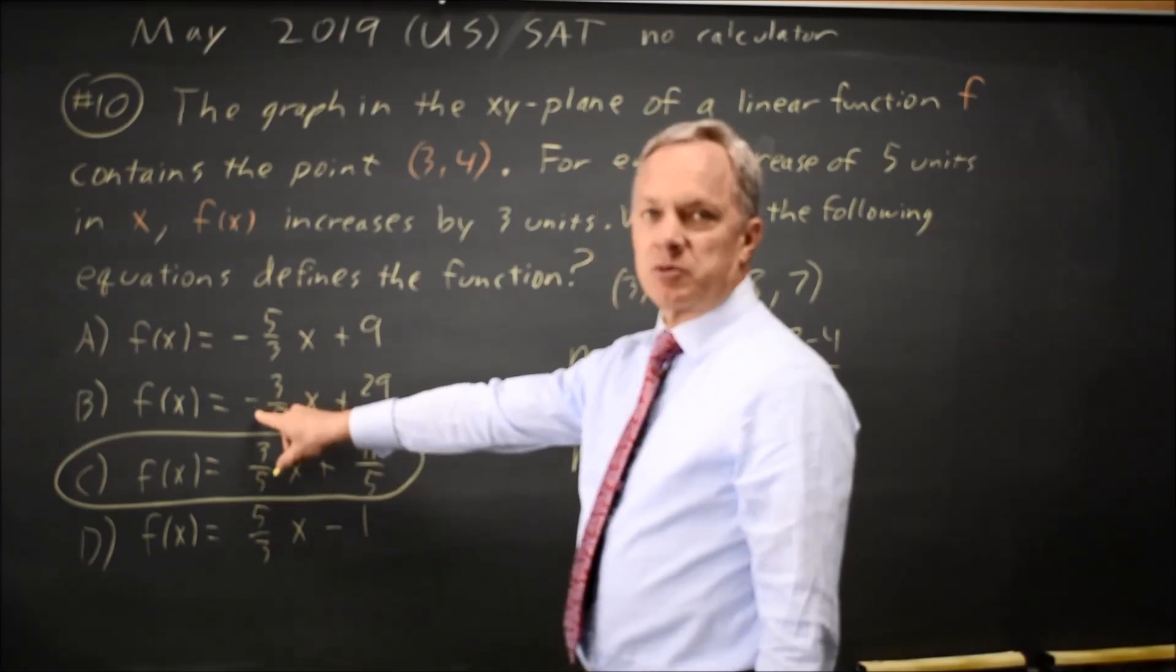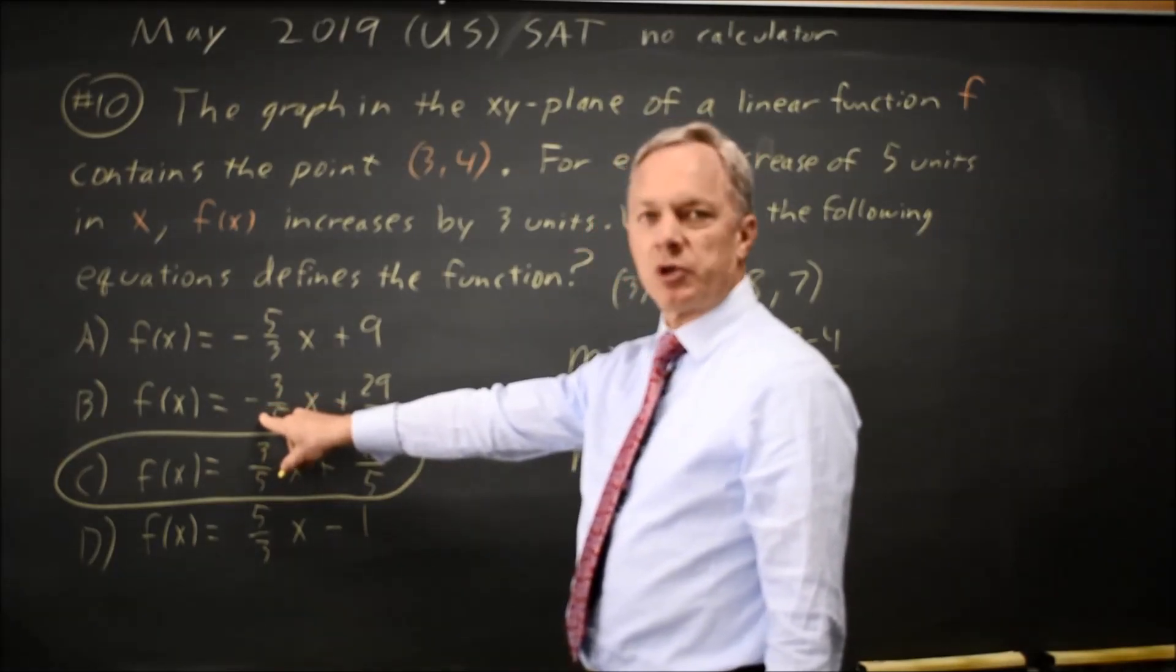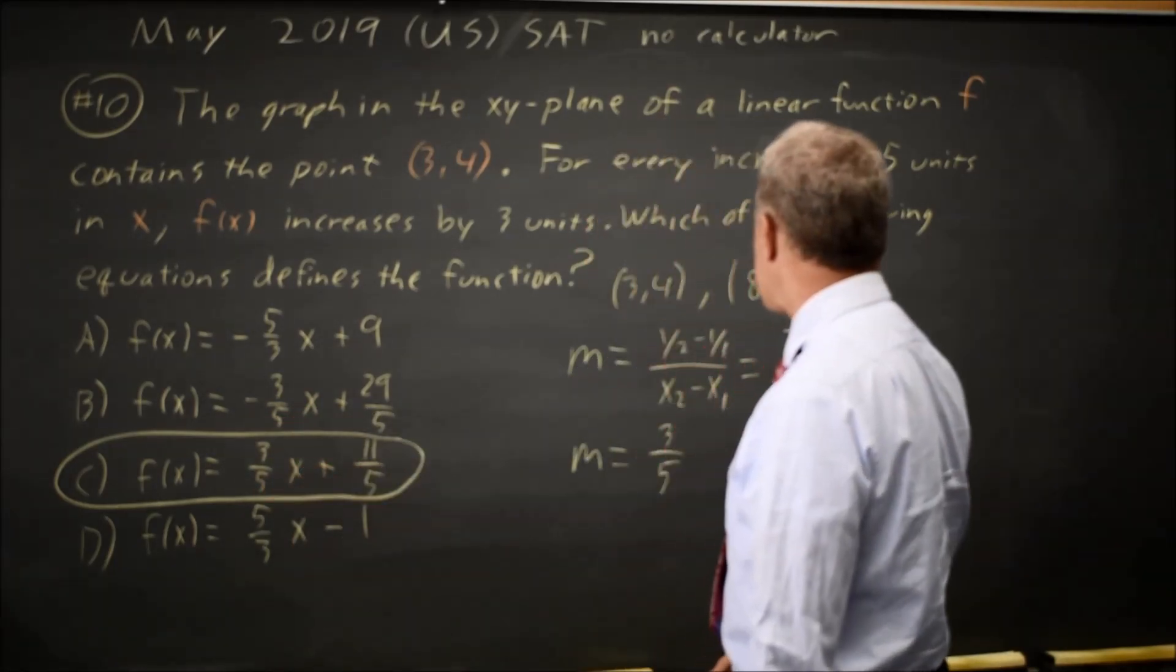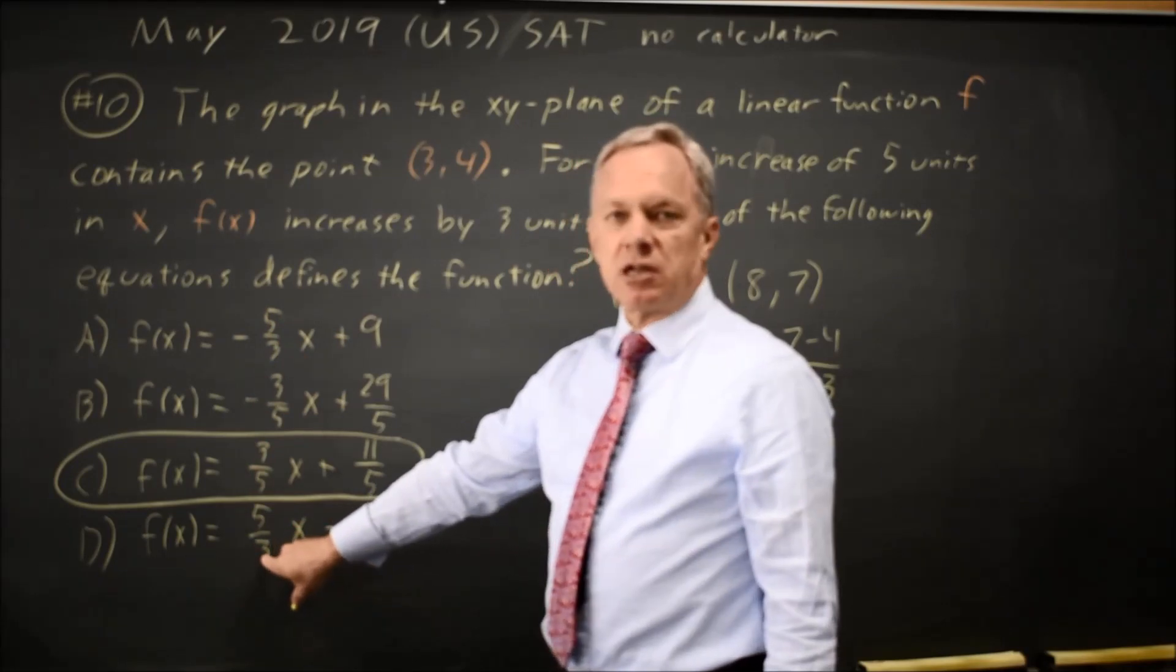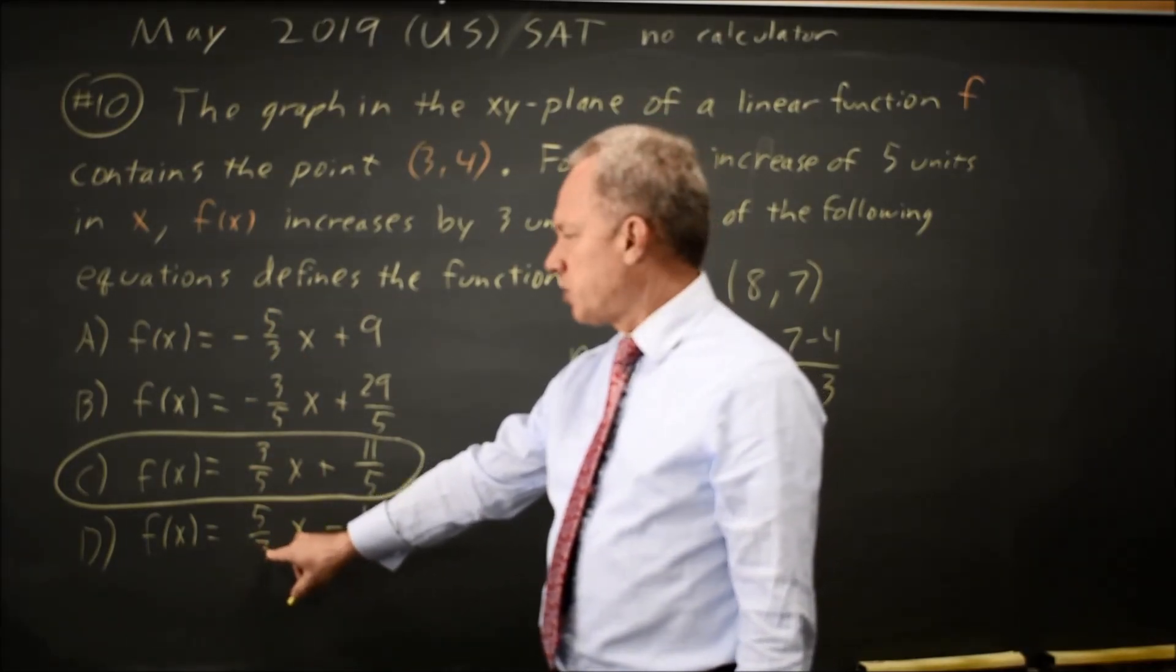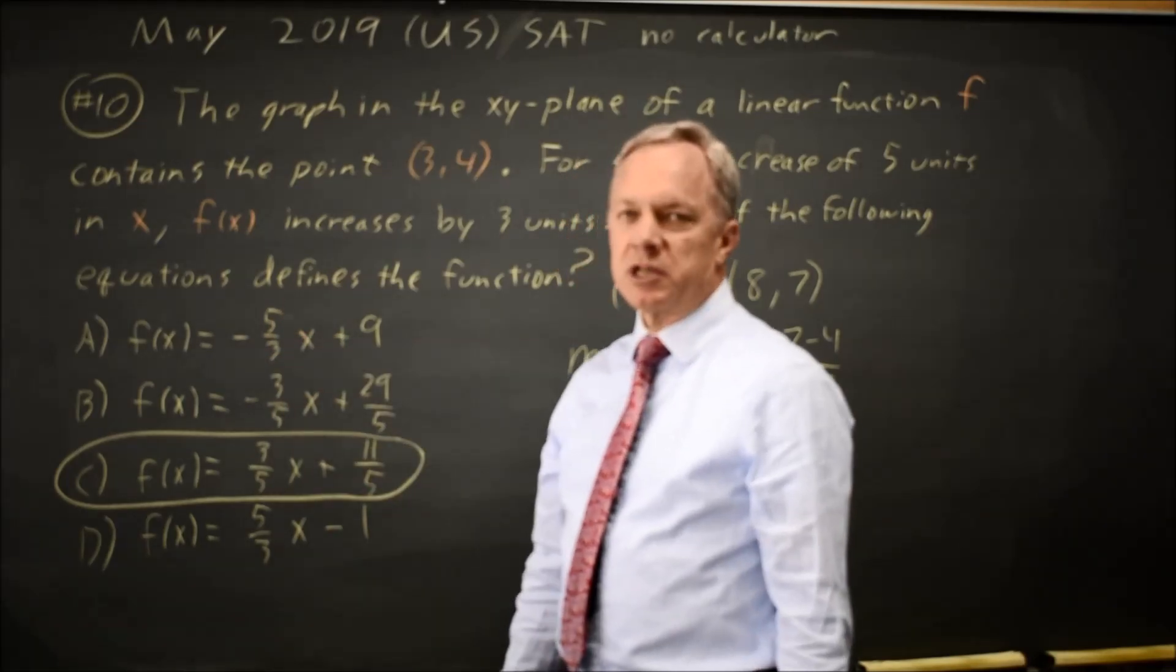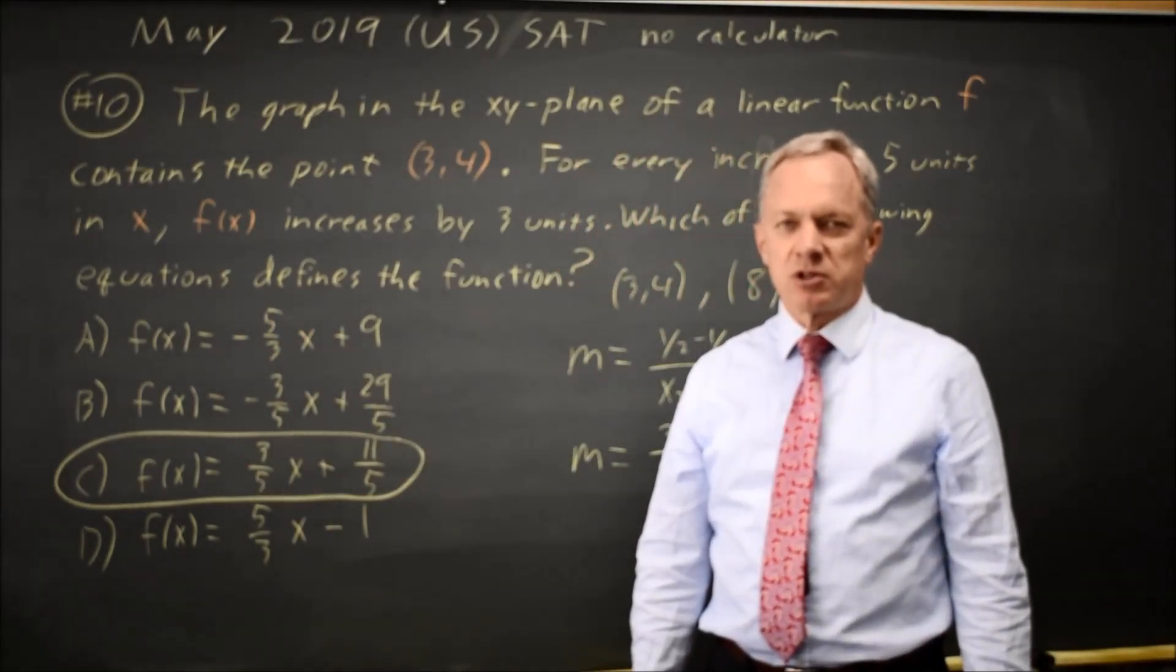This choice comes from swapping the order of either the x's or the y's, but not both. If you swap both, you still get the correct answer. And these two choices come from flipping the fraction and putting the x's on top and the y's on the bottom, and in one case also swapping the order of one pair of coordinates but not the other.